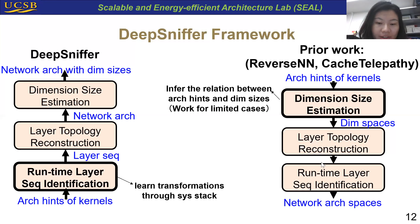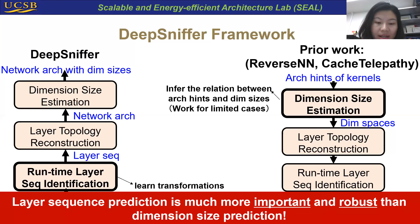However, in DeepSniper, we can provide an exact network architecture prediction with reduced dimension spaces. So in summary, we envision that the layer sequence prediction is much more important and robust compared to dimension size prediction.